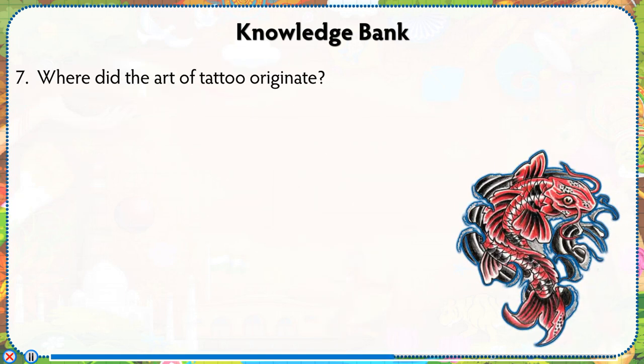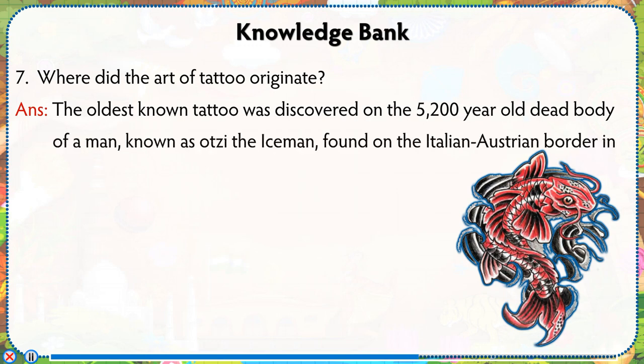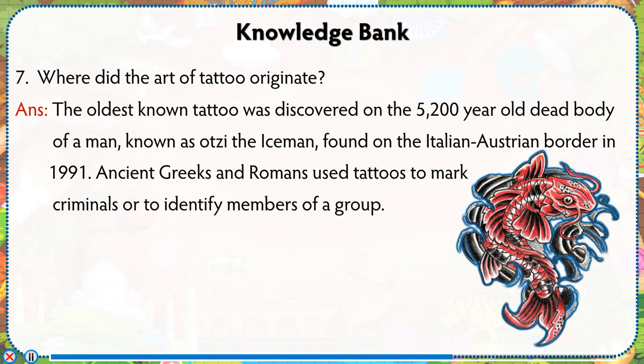Where did the art of tattoo originate? The oldest known tattoo was discovered on the 5,200-year-old dead body of a man known as Ötzi the Iceman, found on the Italian-Austrian border in 1991.